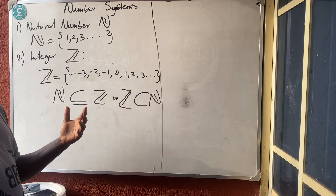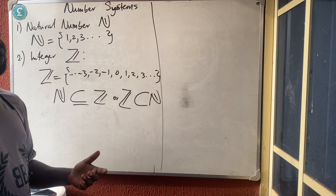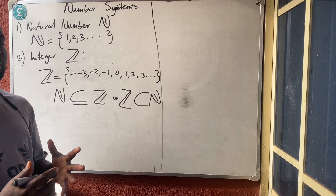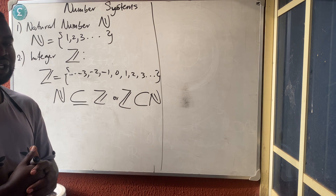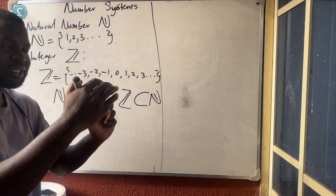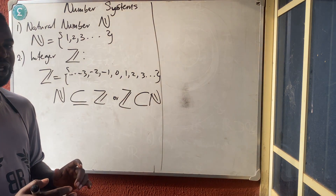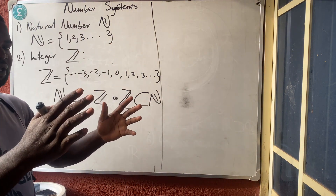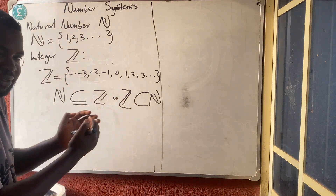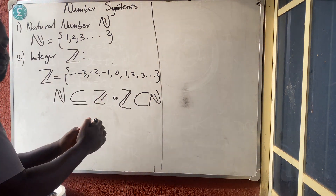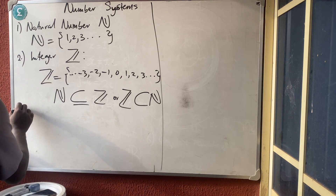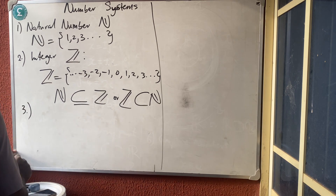A subset is a set that is gotten from another set. For example, I am a mathematician — I studied mathematics. The mathematics department is a subset of the physical science faculty. Physical science is the big man, a faculty, but mathematics is a subset: another set gotten from the physical science faculty.